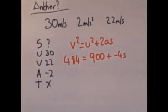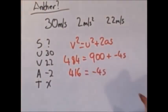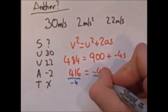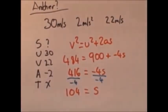So we have 484 equals 900 plus minus 4S. So we are going to minus 900, and we get minus 416 equals minus 4S. If we divide by the 4S, we get 104 equals S. So the town is 104 meters away.